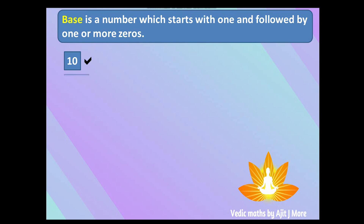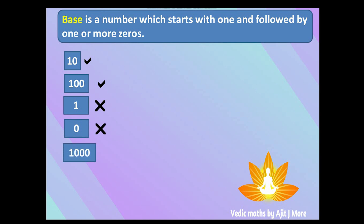100 is also a base because it starts with one and is followed by two zeros. But if you take just 1, it won't be called a base. Zero alone is also not a base. 1000 is an example of a base — it starts with one and is followed by zeros. 101 cannot be called a base because after starting with one you're only allowed to have zeros, but you get a one again.